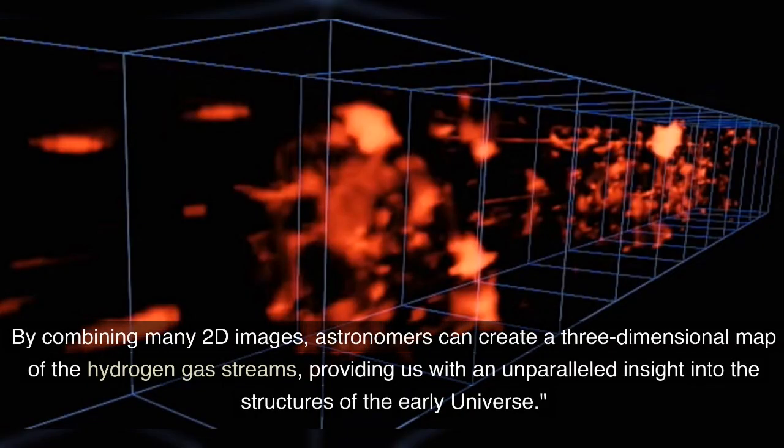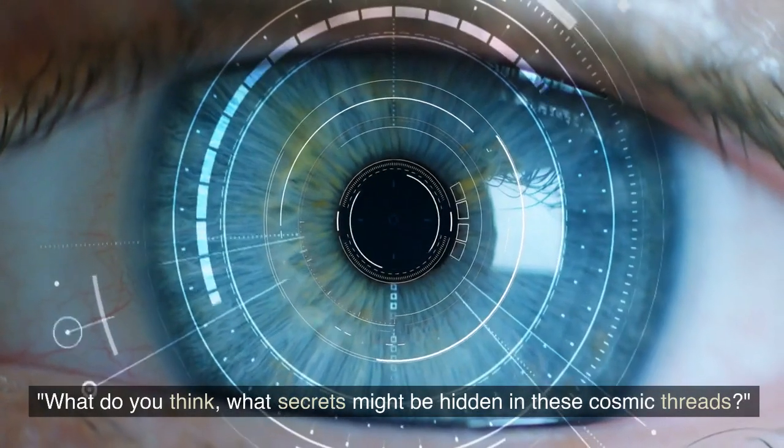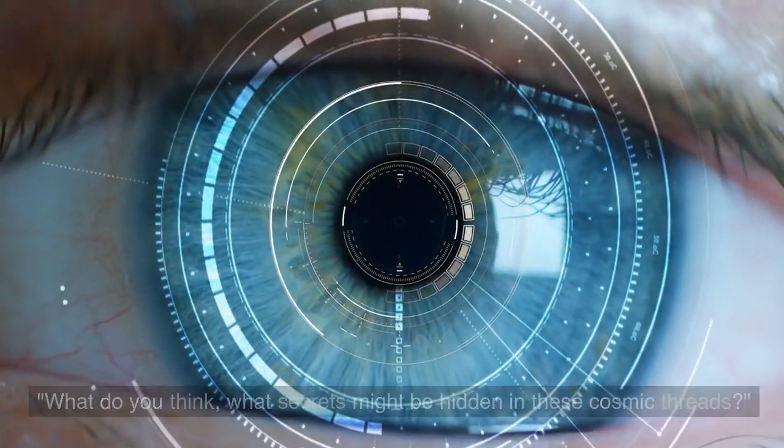By combining many 2D images, astronomers can create a three-dimensional map of the hydrogen gas streams, providing us with an unparalleled insight into the structures of the early universe. What do you think, what secrets might be hidden in these cosmic threads?